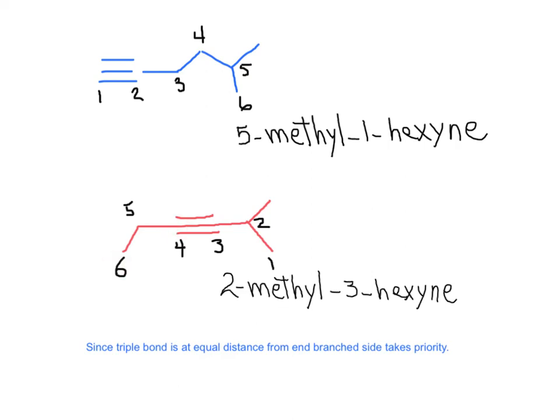If we explore here: one, two, three, and one, two, three. But we need to assign the triple bond the smallest number, and also assign the smallest number to the branch, a methyl group. In this case, this will be a 2-methyl-3-hexyne.